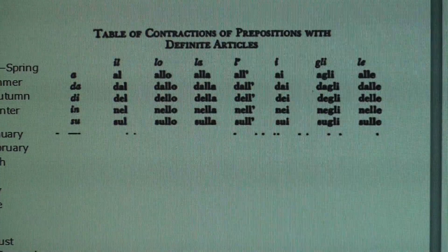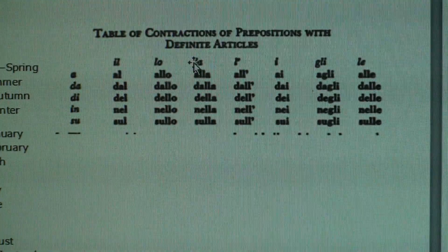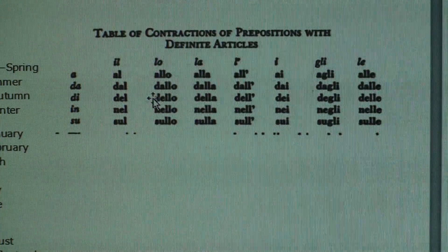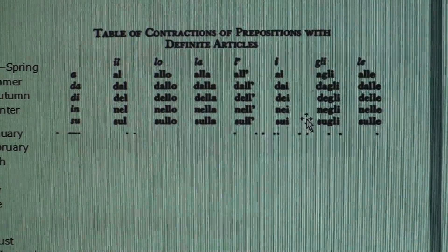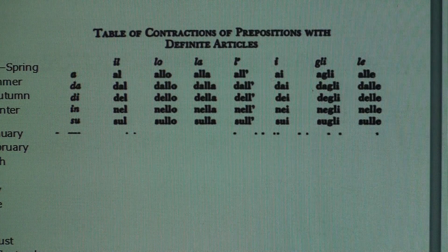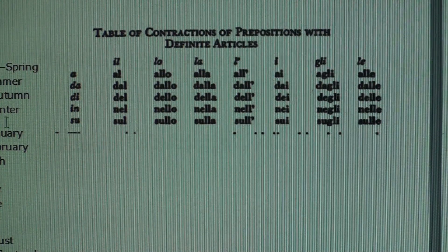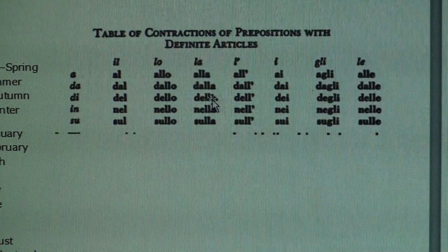So these right here are prepositions, and these are definite articles. So you can see Italian has lots of contractions, which I didn't bother really rote memorizing, which I'll talk about later. I used like an interleaving technique to kind of just absorb these as I went, as much as possible. So this was a very useful chart.